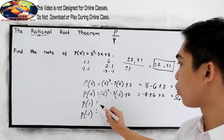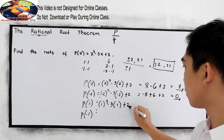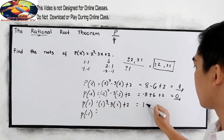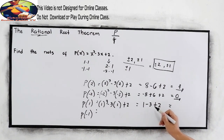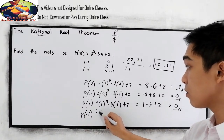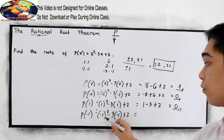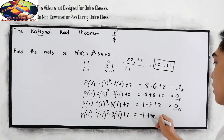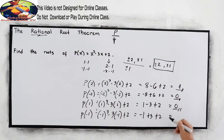Now let's try x = 1: 1³ − 3(1) + 2 = 1 − 3 + 2 = 0. And P(−1): (−1)³ − 3(−1) + 2 = −1 + 3 + 2 = 4.